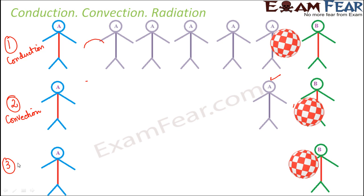And in radiation, no medium is required. You do not need anybody. So here, these extra people who were actually helping in the process of transfer, they were the medium. But here you do not need a medium. You just throw it and it will reach B. So you do not need a medium at all.